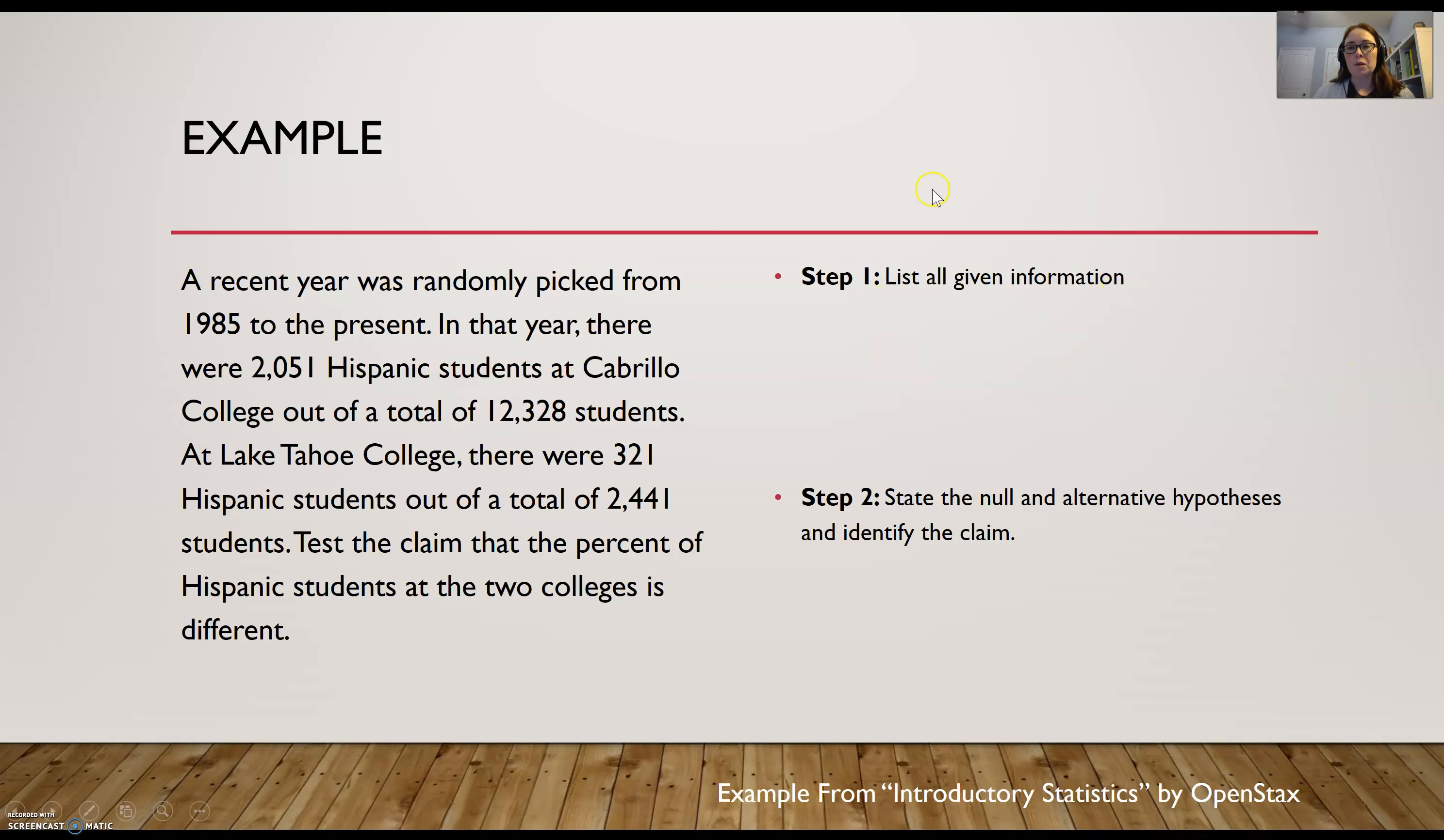Our first step, I want to start pulling out the information and assigning it to the right variable. So if I start with my sample sizes, for Cabrillo College, it was 12,328, and for Lake Tahoe College, 2,441. Now, they also gave me the number of successes, the 2,051 and the 321, so those are my X's for each sample. And so from that, I'm going to go ahead and calculate the sample proportions, the P-hat 1 and P-hat 2, and that's just taking X divided by N. And so if I do that for each of my samples, I get two sample proportions.